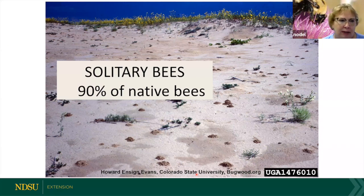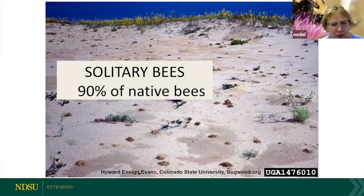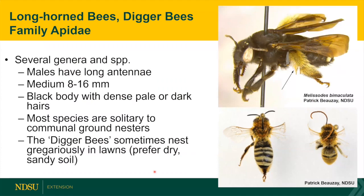Most of our bees — 90% of them — are solitary bees. You can see here where they nest in the ground. It kind of looks like an earthworm mound, but if you look closer and watch it, you'll see a bee come out of it instead of an earthworm. Sometimes they're solitary, other times they'll nest in groups. Another family in the Apidae includes the longhorn bees and digger bees. This includes Melissodes maculata, which has the hairs for collecting pollen on the leg. The males have much longer antennae and the females have shorter antennae.